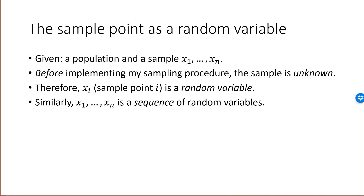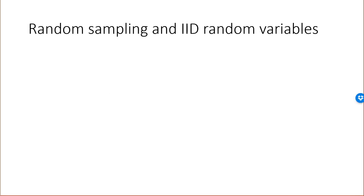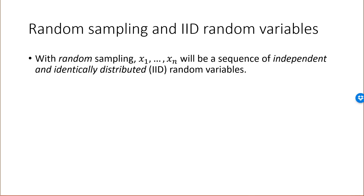An important concept when we talk about sampling is the concept of random sampling. Remember, random sampling means that every element in the population has the same probability of being selected into the sample. And random sampling corresponds to what's called iid random variables. So if I have random sampling, x1 through xn will be a collection of n independent and identically distributed random variables.